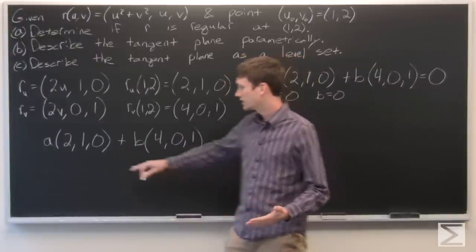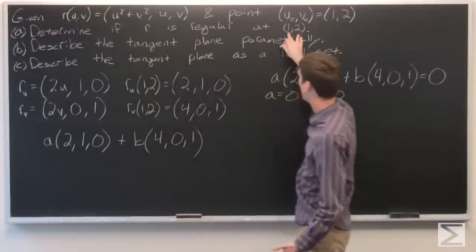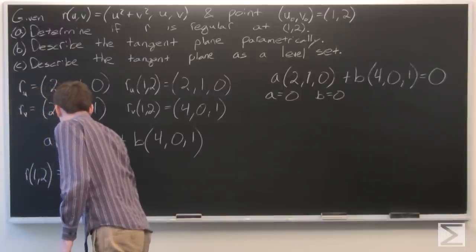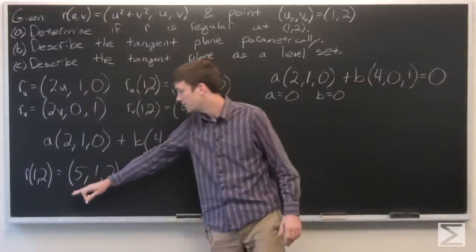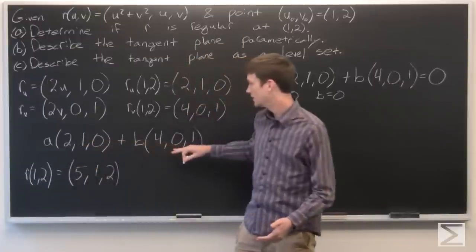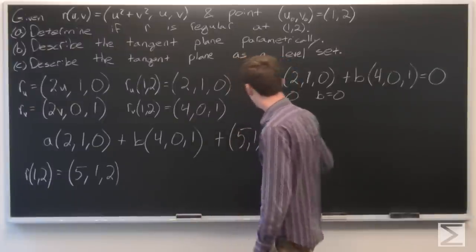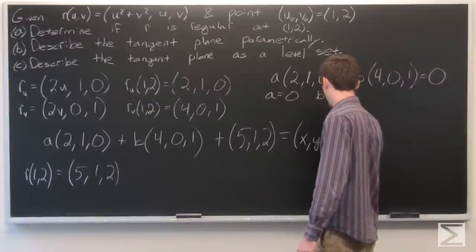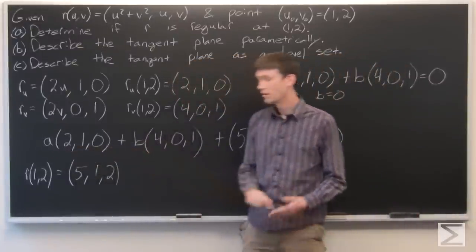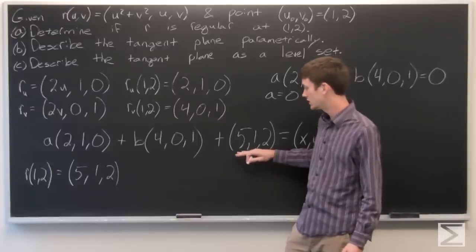And so now we have our tangent space, which is a set of vectors, but we want to shift this to our point r at 1, 2. So r at 1, 2. And that is 5, 1, 2 is 5, 1, 2 by just plugging in 1, 2 into the equation for r of u, v. And now to shift the tangent space to this point, we'll just add 5, 1, 2. So we have our set of points x, y, z is the tangent plane where a and b are arbitrary parameters. And they're given as a linear combination and adjusted to the point 5, 1, 2.